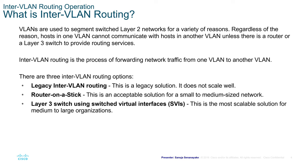There are three inter-VLAN routing options. The legacy inter-VLAN routing, which is the legacy solution and does not scale well with larger networks. The router on a stick option, which is acceptable for small to medium-sized networks but may not be ideal for large-scale networks. And layer 3 switching using switch virtual interfaces, also known as SVIs, which is the most scalable solution for medium to large organizations. In my opinion, even for smaller organizations, I would go with the layer 3 switch using SVIs.